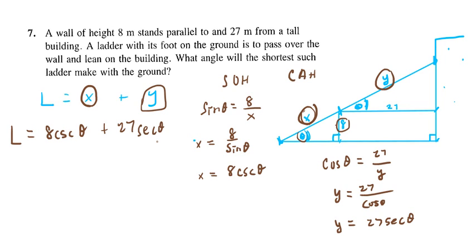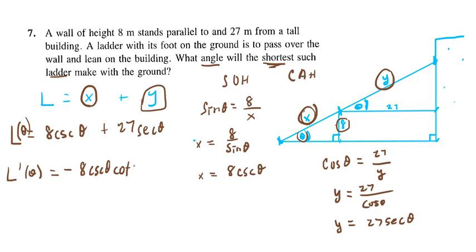There are other ways to do this, but this is the most straightforward. L is a function of theta — one variable — and this is a maximum-minimum problem. We're minimizing the length of the ladder. Now we take the derivative. L prime of theta: the derivative of cosecant theta is negative cosecant cotangent, so that term becomes negative 8 cosecant theta cotangent theta.